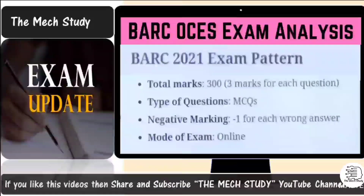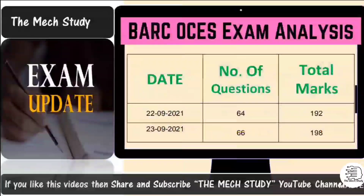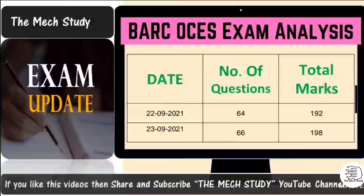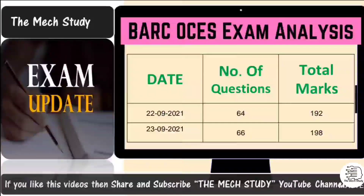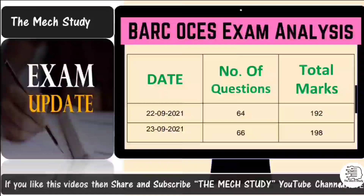For the date of 22nd September, we connected with 20 to 30 people who wrote that examination. They concluded that their total number of attempts was 64, and considering three marks per question, that comes to 192 marks. This is the number of questions attempted — I have considered all attempted questions as correct.